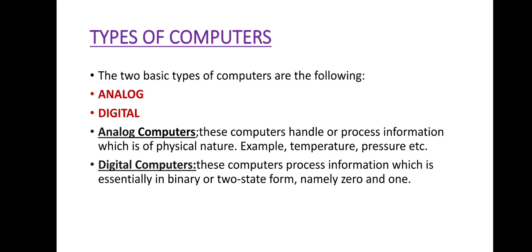There are two basic types of computers: analog and digital. Analog computers are those used to measure speed, pressure, temperature, and so on. Digital computers are computers that process information in essentially binary or two-state form, namely 0 or 1.